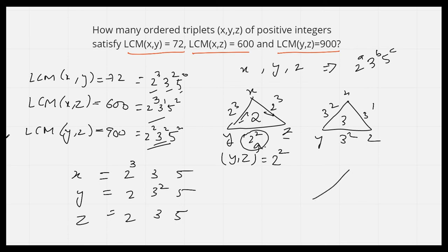Now let us do the same for the power of 5. Between x and y it is 5⁰, between x and z it is 5², and between y and z it is also 5². By the same logic, z has 5². From here we can see that between x and y it is 5⁰, so neither of them will have any power of 5, else at least one 5 would have been here.